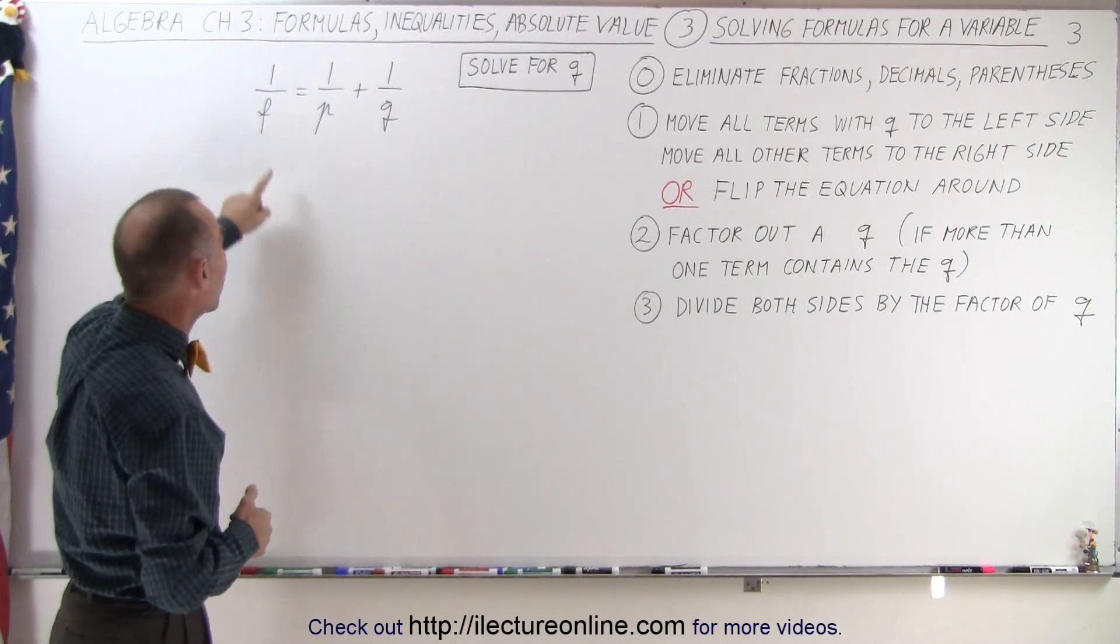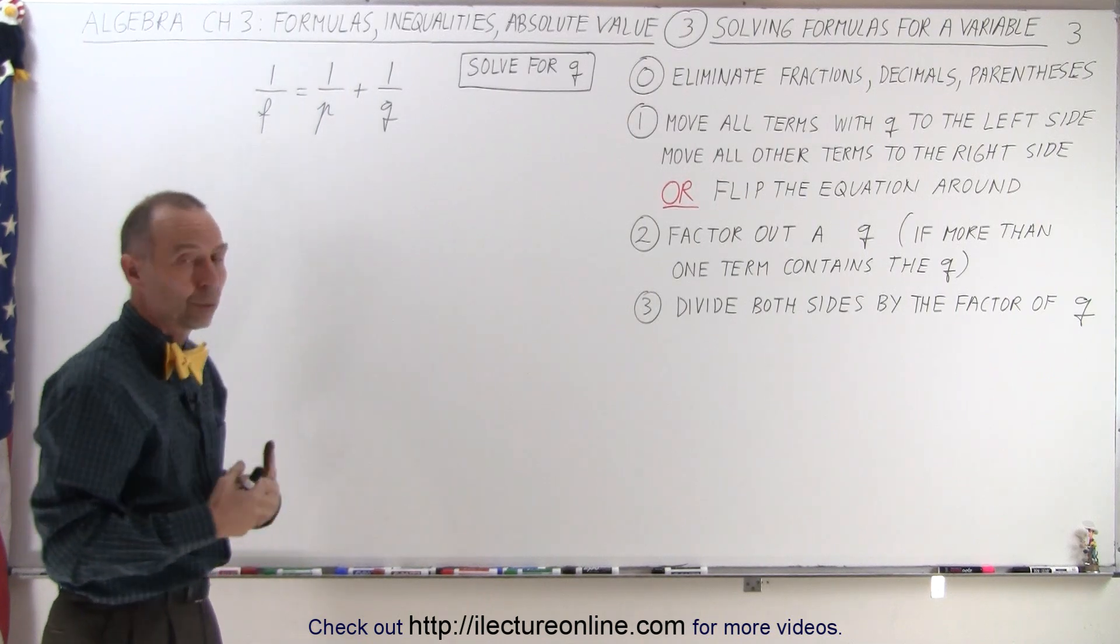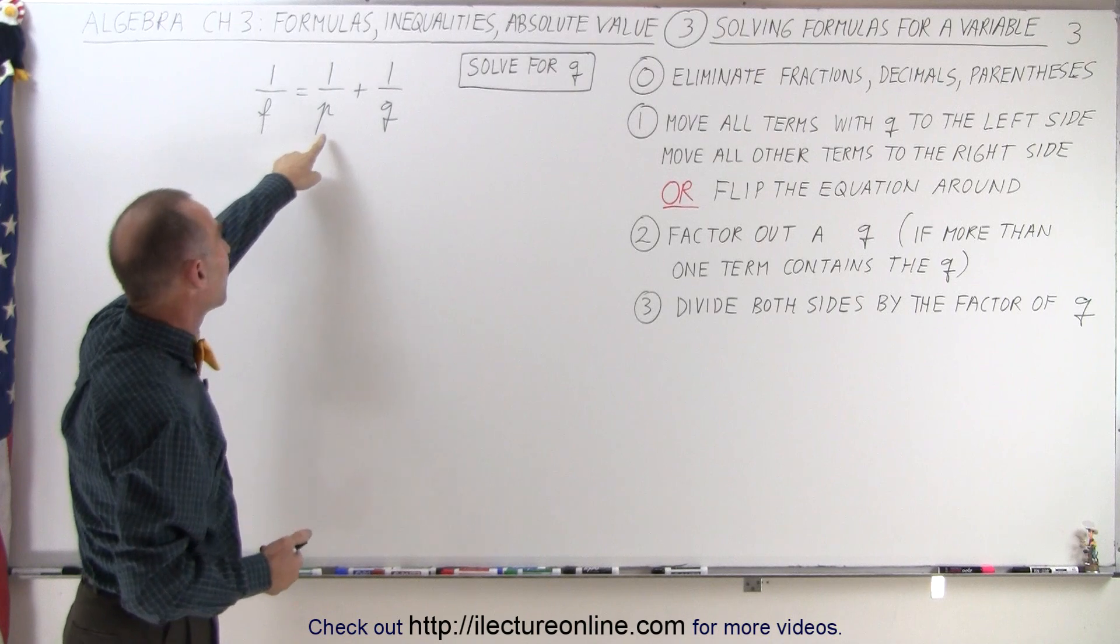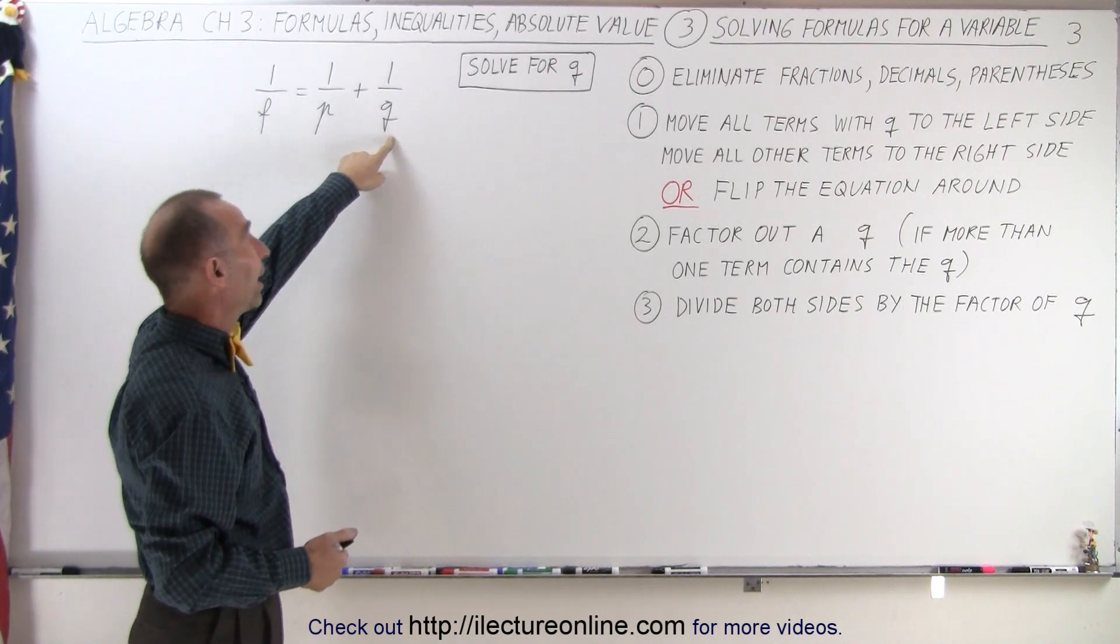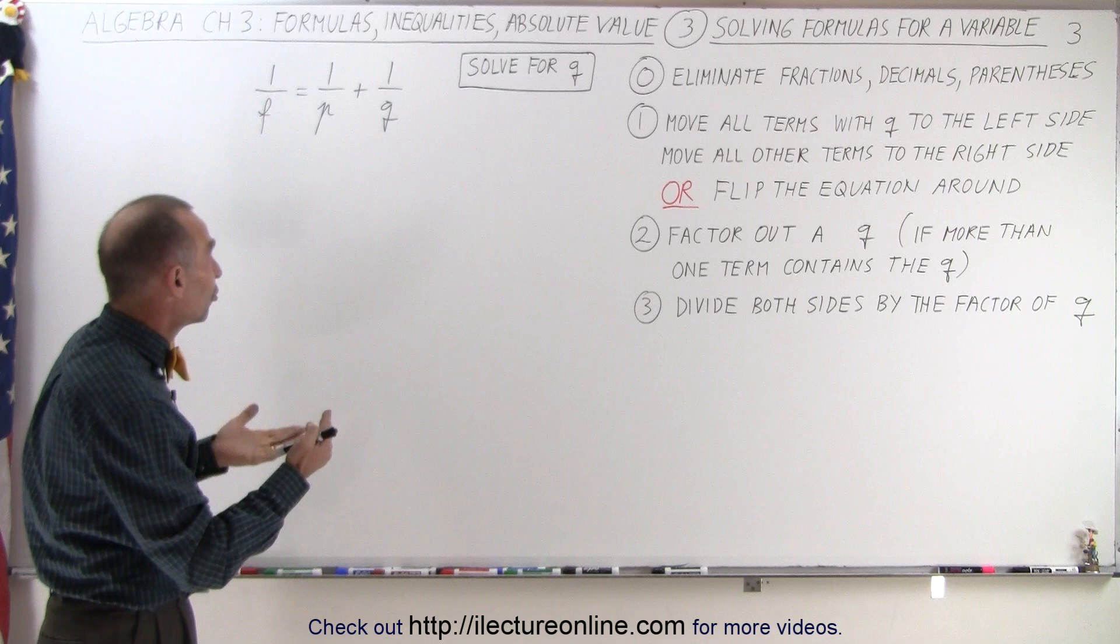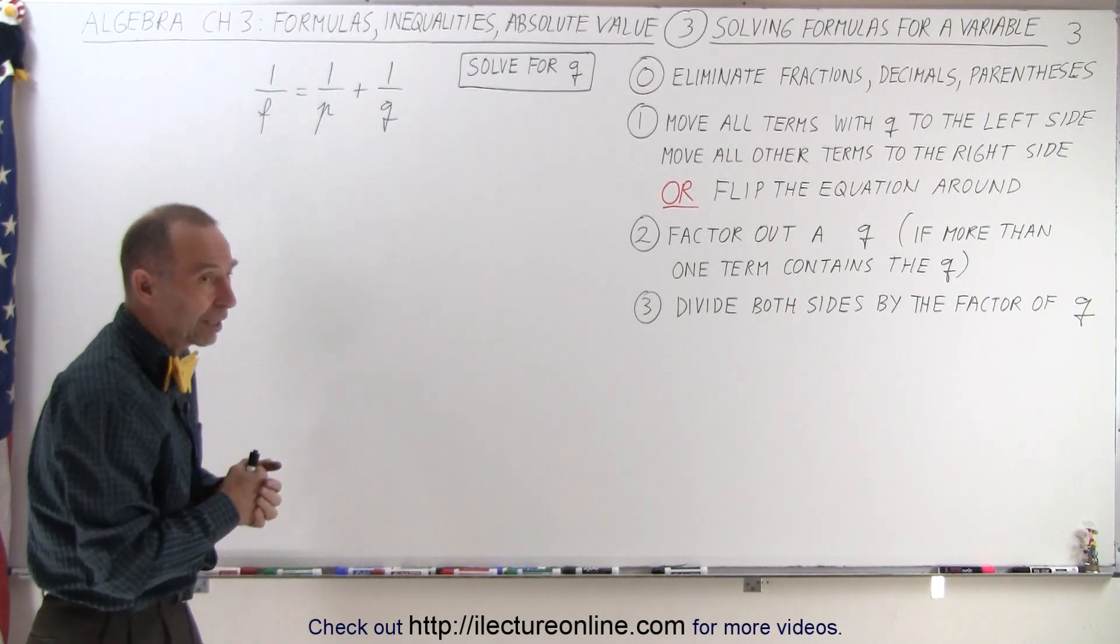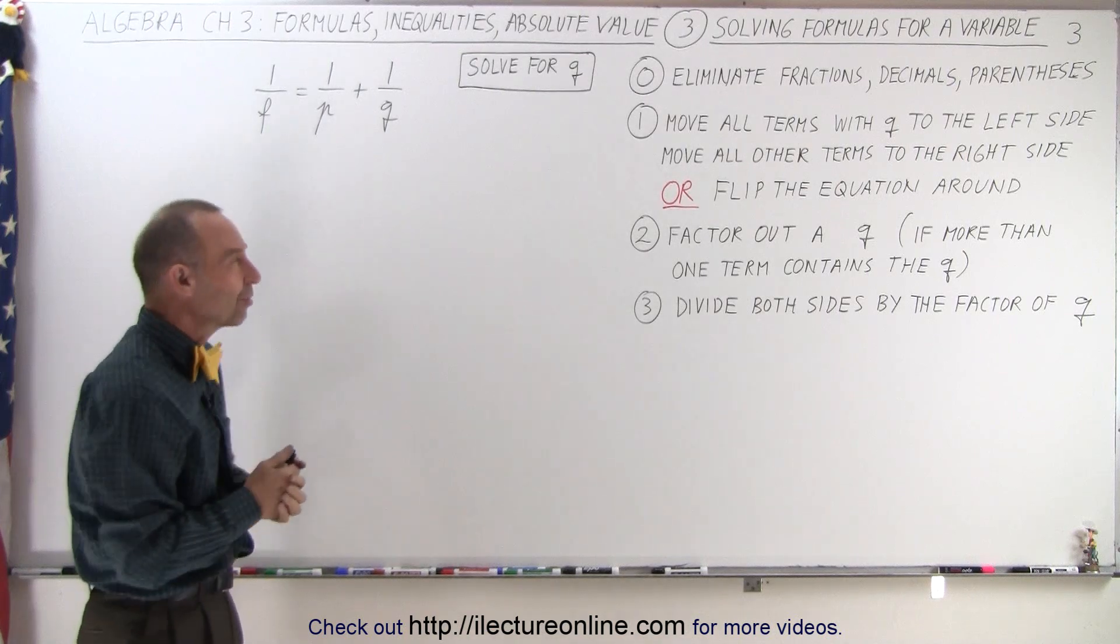Now this is a real equation. This equation is used to work with lenses in physics. F is the focal length, P is the object distance, and Q is the image distance. And so there's a relationship between the object distance, the image distance, and the focal length of a lens. That's what this equation is about.